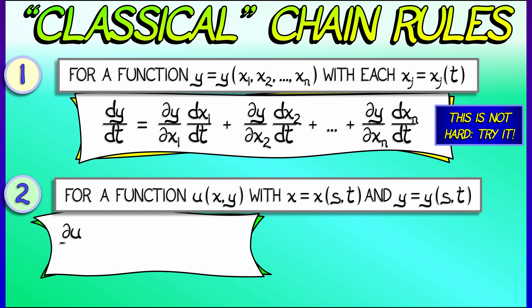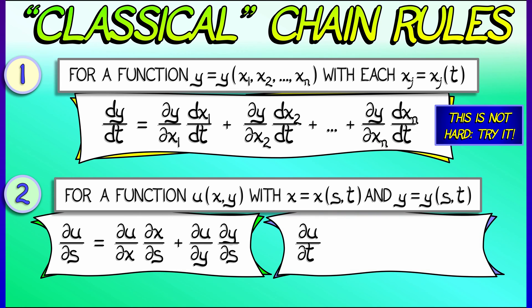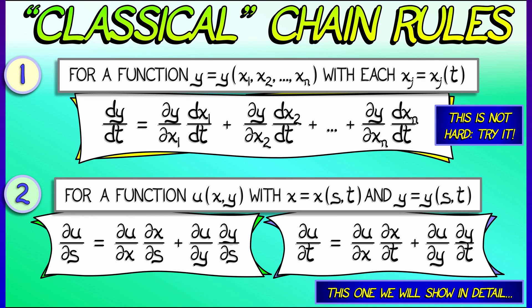The old-fashioned calculus books will make you memorize the partial u with respect to s is partial u, partial x, partial x, partial... I can't even say it. What a mess. And same thing with t. And why is it this way? Why do you add them? Why don't you subtract?